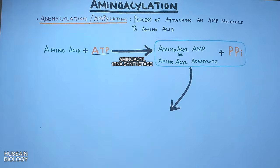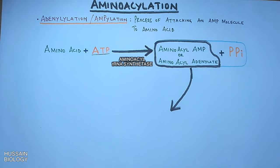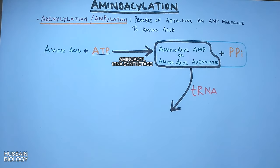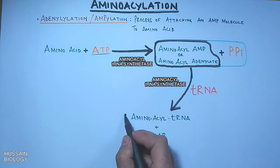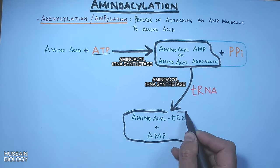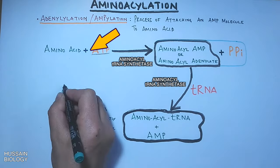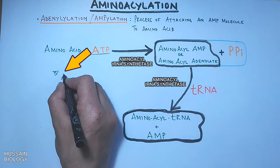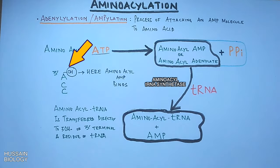The second step is the transfer reaction, where the aminoacyl-AMP is transferred to tRNA. The aminoacyl-AMP targets the hydroxyl group of adenine, and we get aminoacyl tRNA and AMP as products. It is at the CCA sequence of tRNA on the three prime end where the hydroxyl group of adenine reacts with aminoacyl-AMP to generate the aminoacyl tRNA.